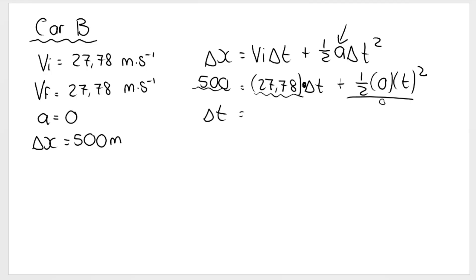So we get 17.998 and so on. So if I round that off to two decimal places, which I'm allowed to do, it'll be .99, but then this 8 will turn it into 18 seconds.